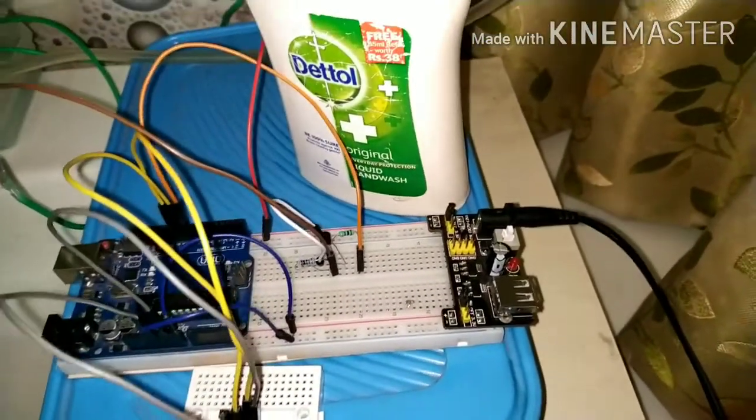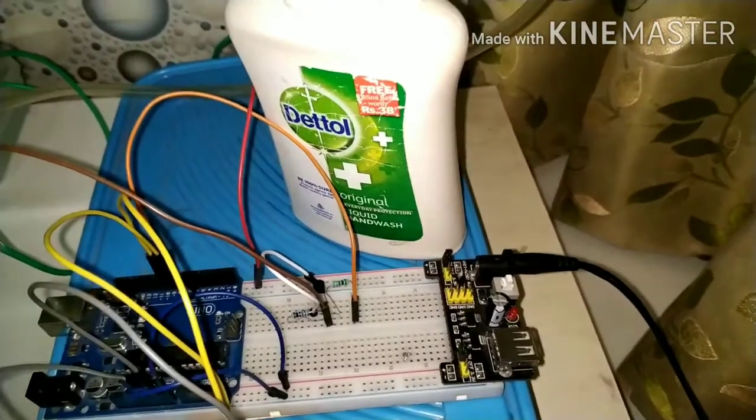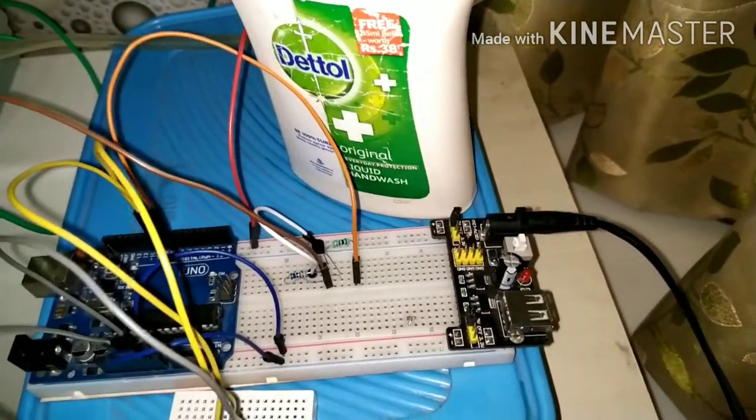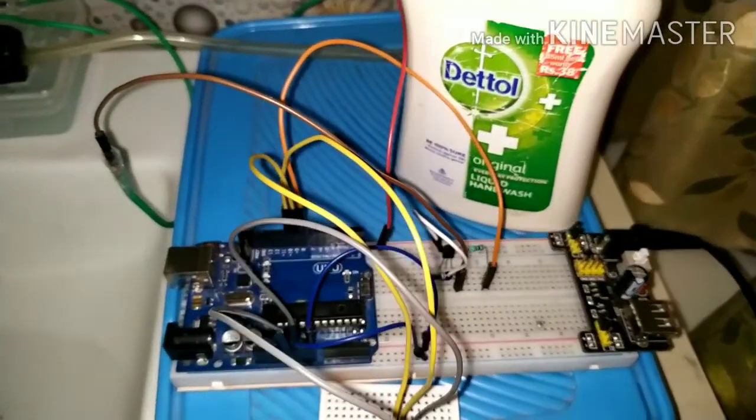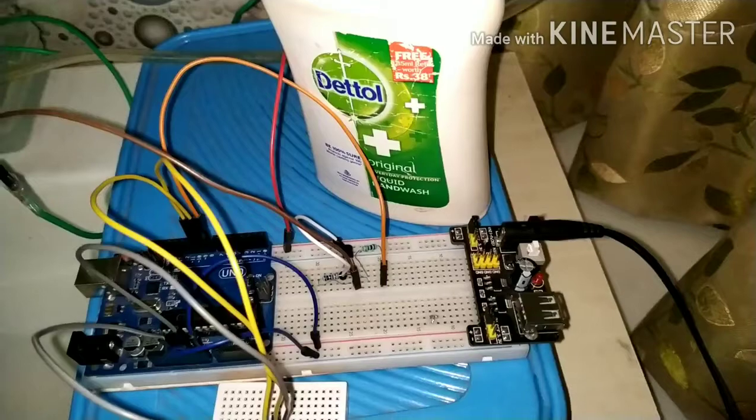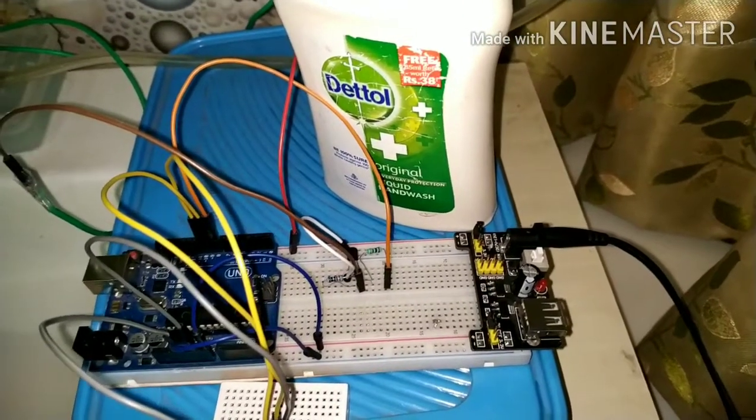Then take a bipolar junction transistor 2N2222A. Connect the 320 ohm resistor between pin 8 of the Arduino to base of the transistor.